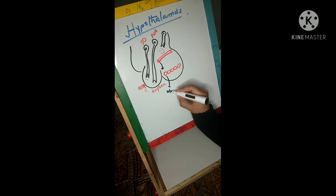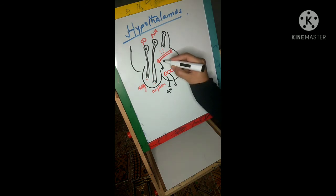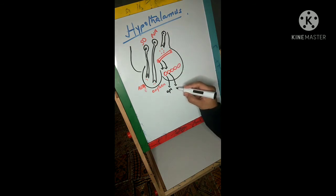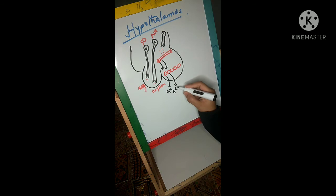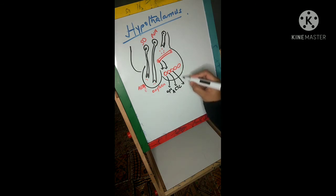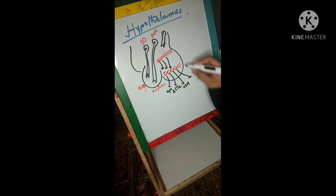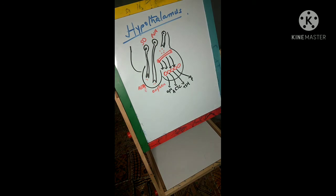For example, there is release of growth hormone releasing hormone and growth hormone inhibiting hormone, which controls the release of growth hormone from the anterior pituitary. Corticotropin releasing hormone and inhibiting hormone result in release of ACTH from the anterior pituitary. We also have prolactin inhibitory hormone that controls the release of prolactin. Then there is thyrotropin releasing and inhibitory hormone from the arcuate nucleus that results in secretion of TSH.